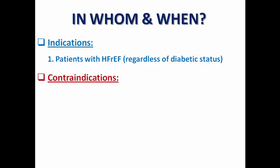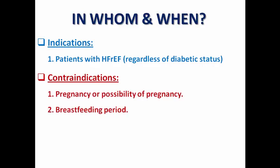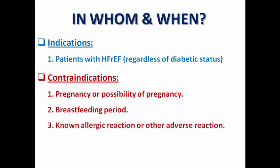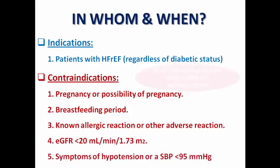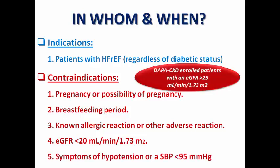What are the main contraindications? First, pregnancy and breastfeeding are contraindications because safety is not yet proven. Also contraindicated in patients with an allergic or adverse reaction to SGLT2 inhibitors. An estimated GFR less than 20 is a cut-off point, and also in patients with symptoms of hypotension or systolic blood pressure less than 95 mmHg.